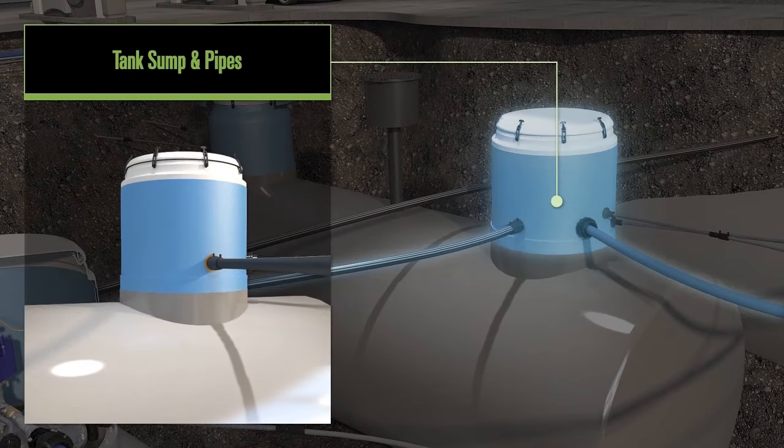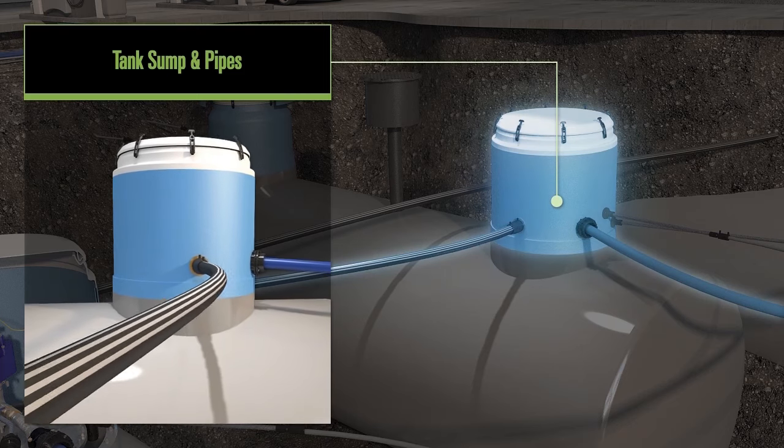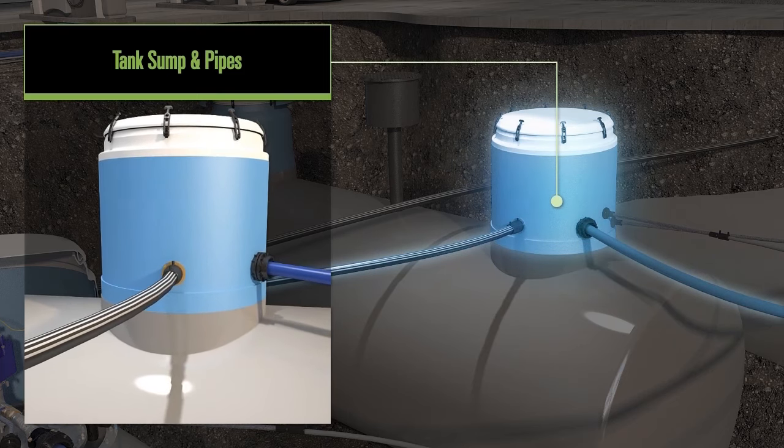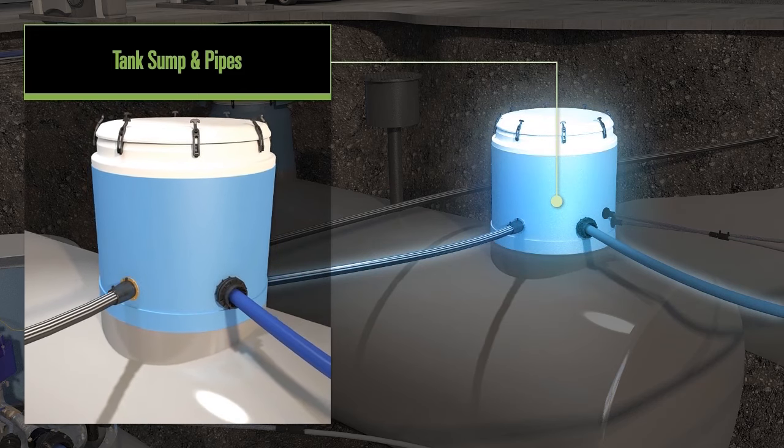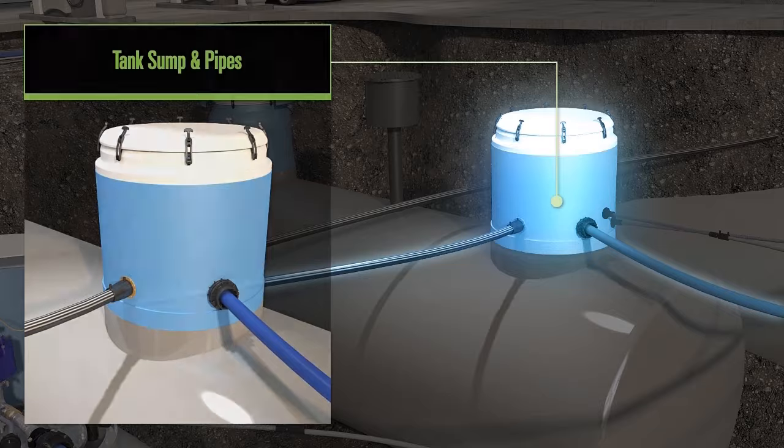When it comes to pipework, there are separate pipes for the movement of fuel and for vapors. Remember when I said an underground environment can be very wet? It is important that pipes have secure, watertight connections into tanks and sumps.